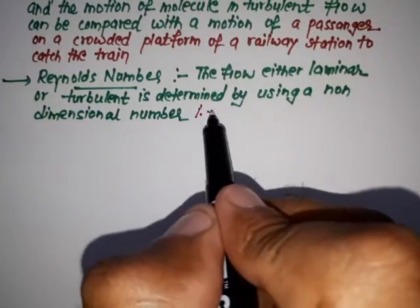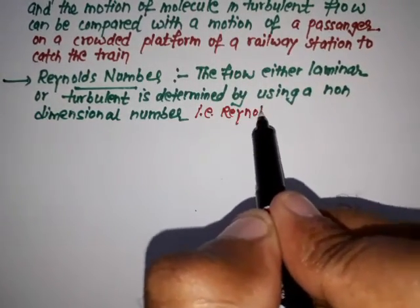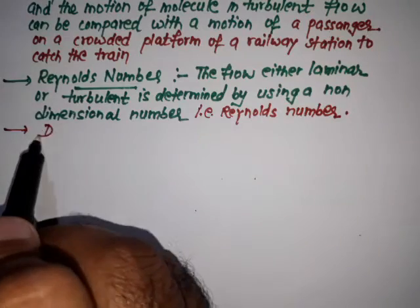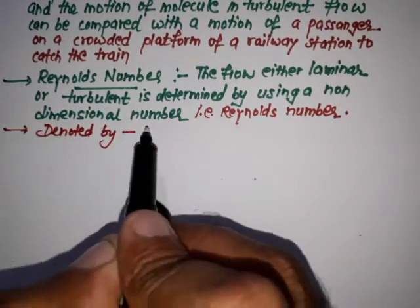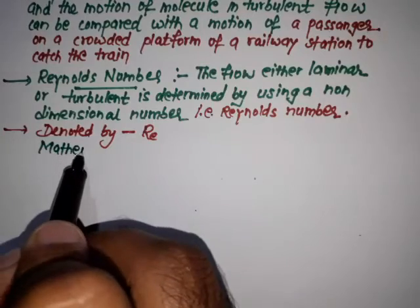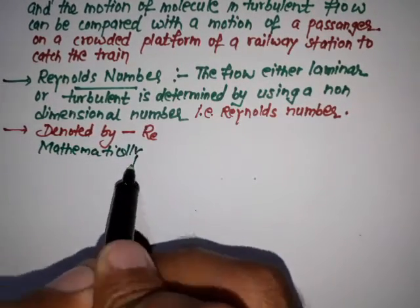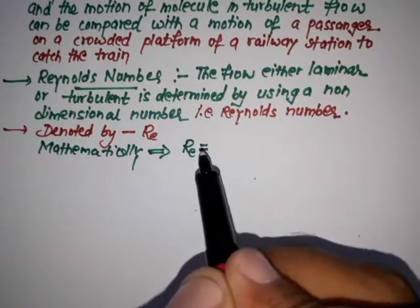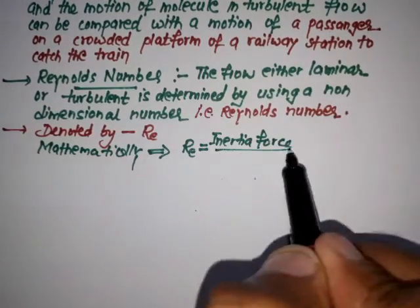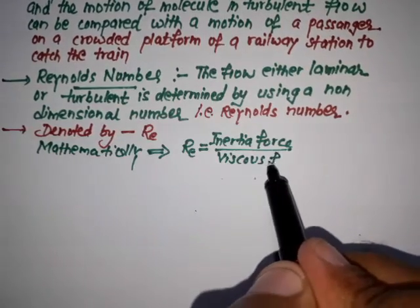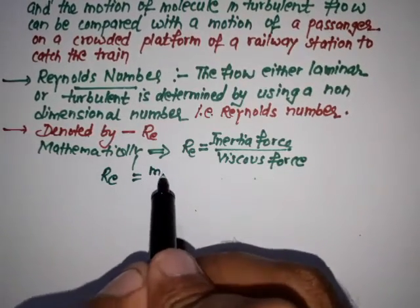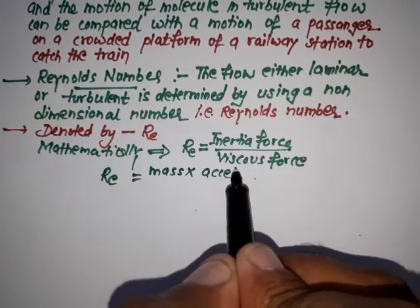That means Reynolds number. It is basically denoted by Re. And mathematically, it can be written as: Reynolds number is the ratio of inertial force upon viscous force. And inertial force, that is equal to mass into acceleration.